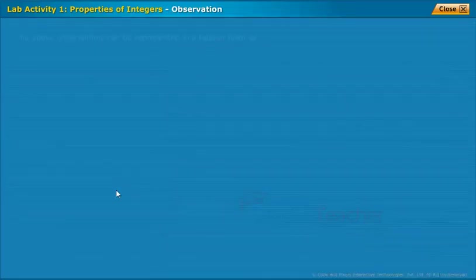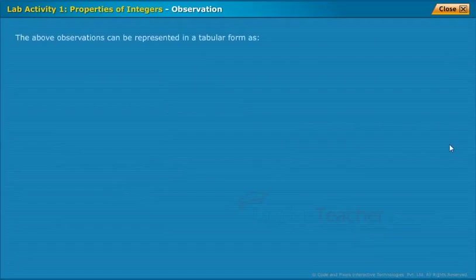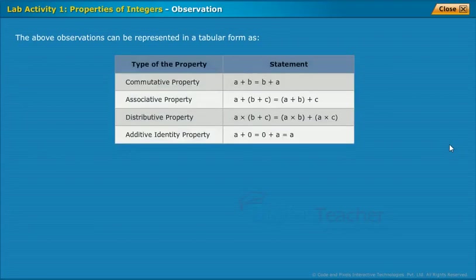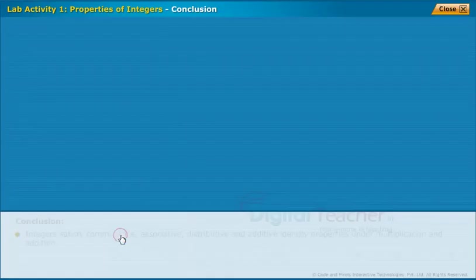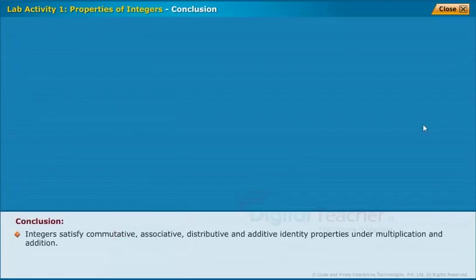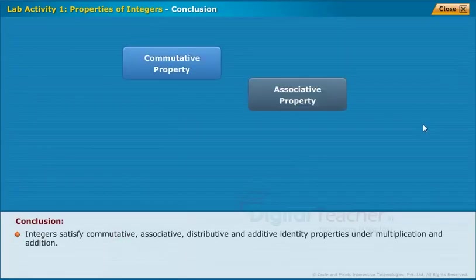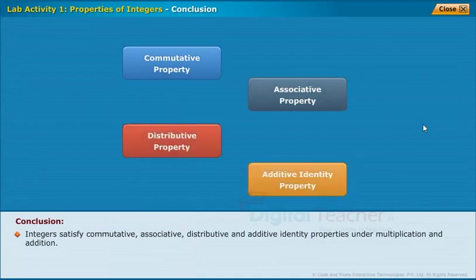The above observations can be represented in tabular form as shown. Integers satisfy commutative, associative, distributive, and additive identity properties under multiplication and addition.